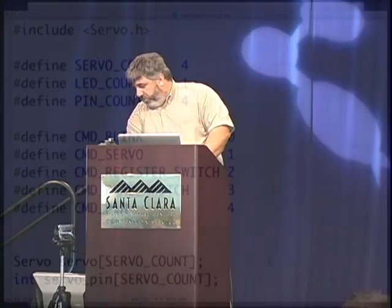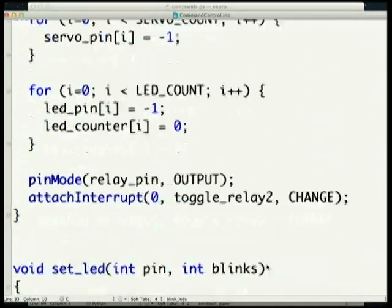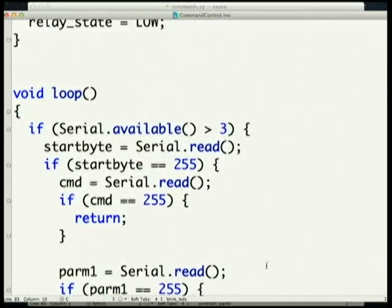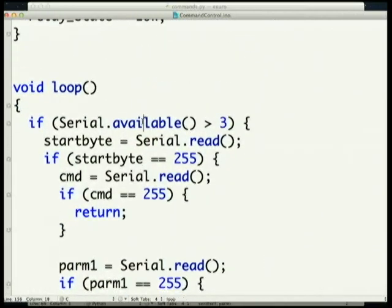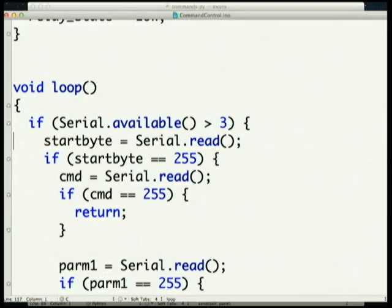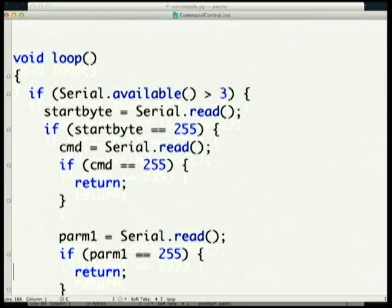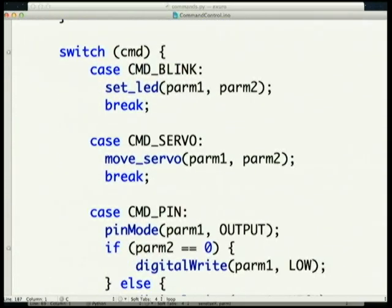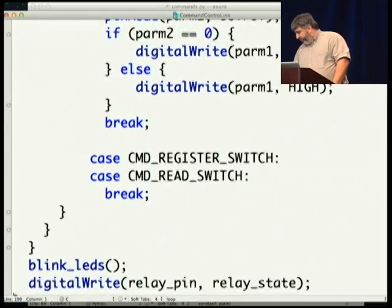In this code, I start with checking to see if I have a command structure ready to be received. If so, I read it, verify that I have a header byte, and jump out based on what type of command it is — whether the command is to blink, run a servo, or turn on and off one of the particular pins on the device. It's pretty straightforward.